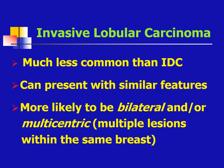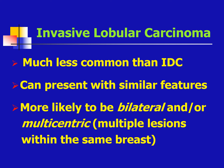Invasive lobular carcinoma is much less common than invasive ductal carcinoma and may present with similar features, but would be more likely to be bilateral and multicentric. Classic histology would be small uniform cells arranged as strands or columns within a fibrous stroma — this is the Indian file pattern — or around uninvolved ducts, which is the bull's eye pattern. They metastasize more frequently to the cerebrospinal fluid, serosal surfaces, and pelvic organs.